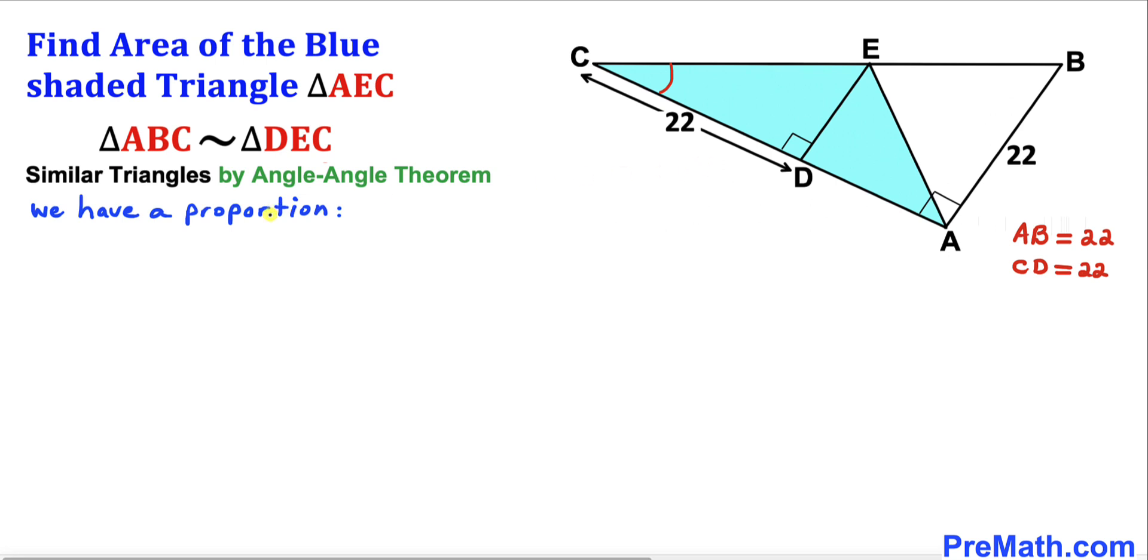Then we are going to have a proportion. That means AB, this side length, divided by this side length AC, equals the other side DE divided by DC.